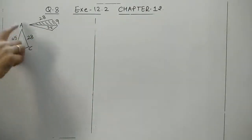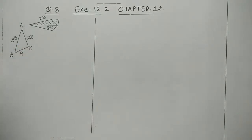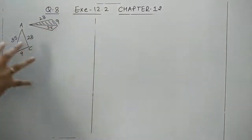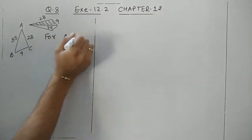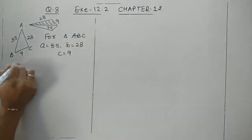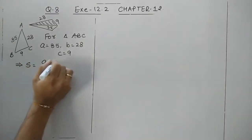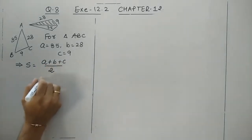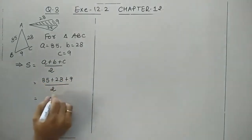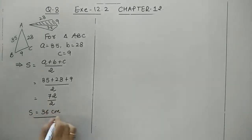One triangle has sides 35, 28, and 9. We need to find the area of one tile, then multiply by 16. For triangle ABC with sides 35, 28, and 9, let's find the semi-perimeter: s = (35 + 28 + 9) / 2 = 72 / 2 = 36 centimeters.